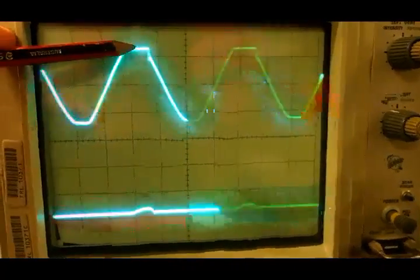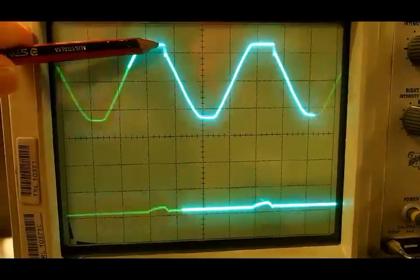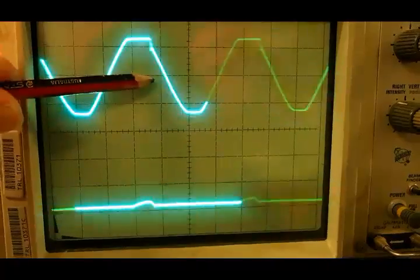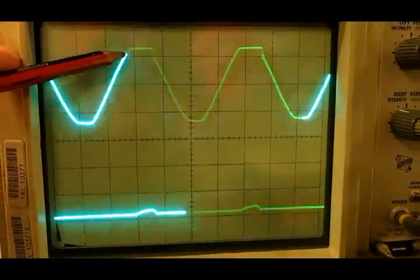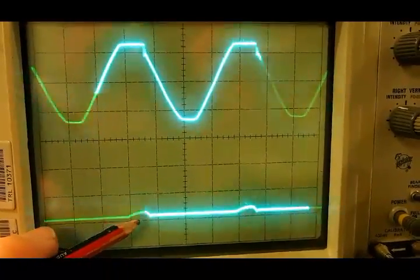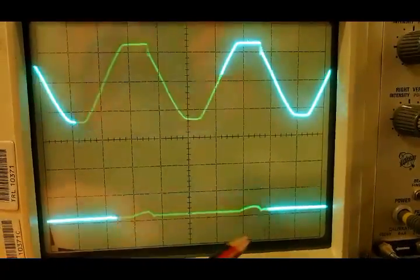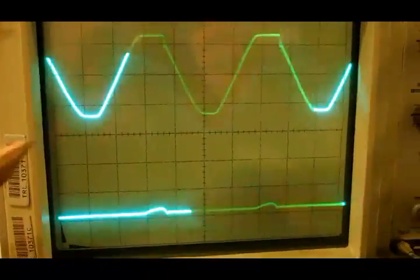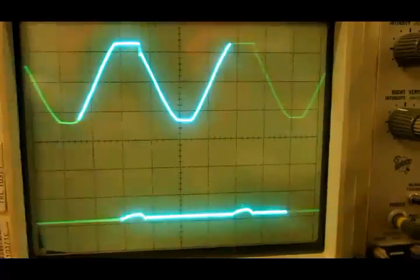You can see this waveform starts to flatten out. That's because on this positive half cycle there's a rectifier inside the regulator which feeds this small current blip into the battery. So you can see these current blips happen once per cycle. This is a 50 Hertz sine wave, so we're going to get 50 current blips per second into the battery.